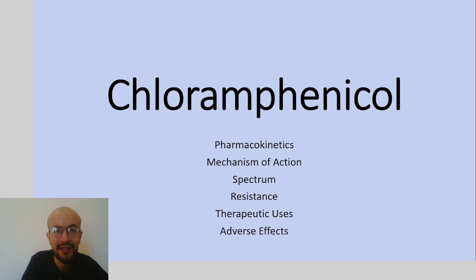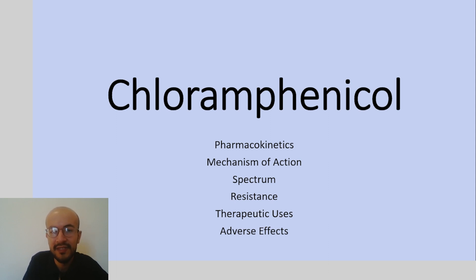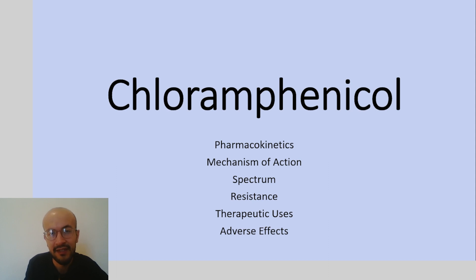Continuing our discussion about antibiotics, we are going to talk about chloramphenicol. Chloramphenicol is from the amphenicol class and it is the only drug in its class used in humans. The other agents are used in veterinary medicine because in humans they cause severe aplastic anemia. Chloramphenicol also causes aplastic anemia but to a lesser degree.